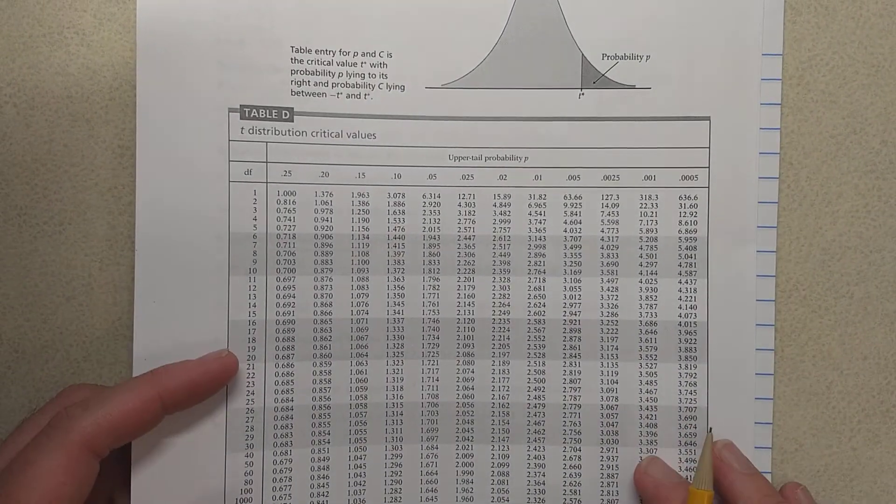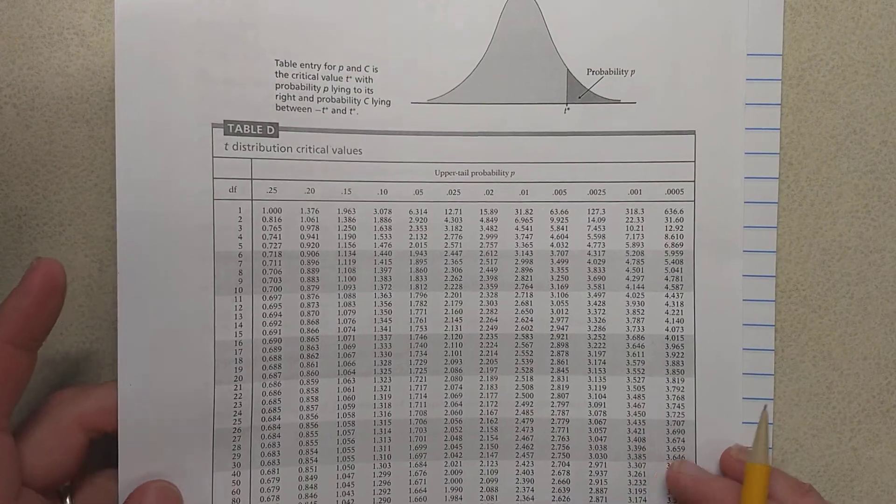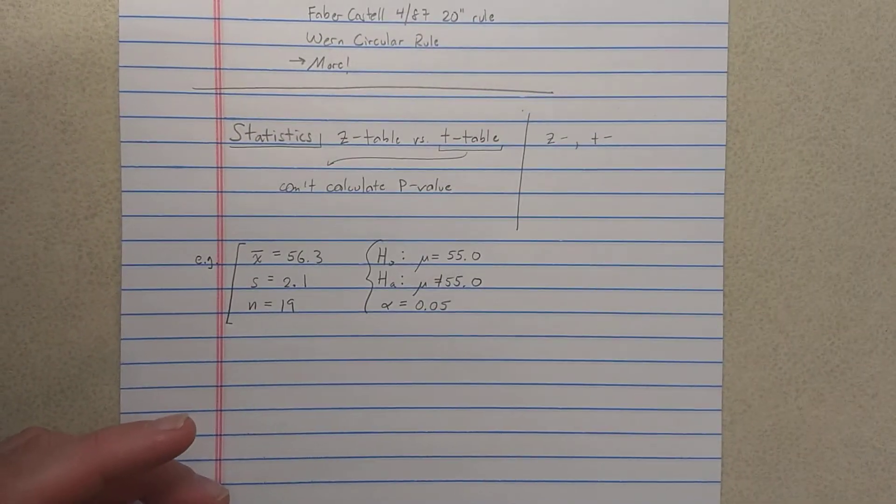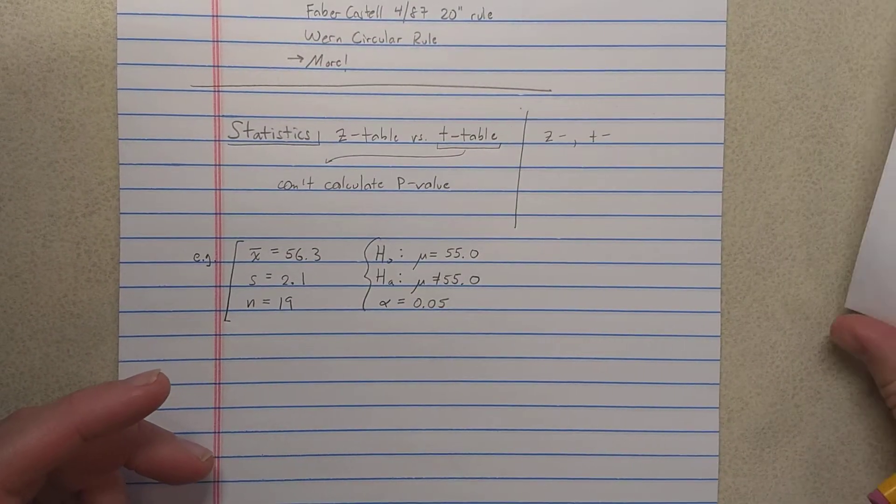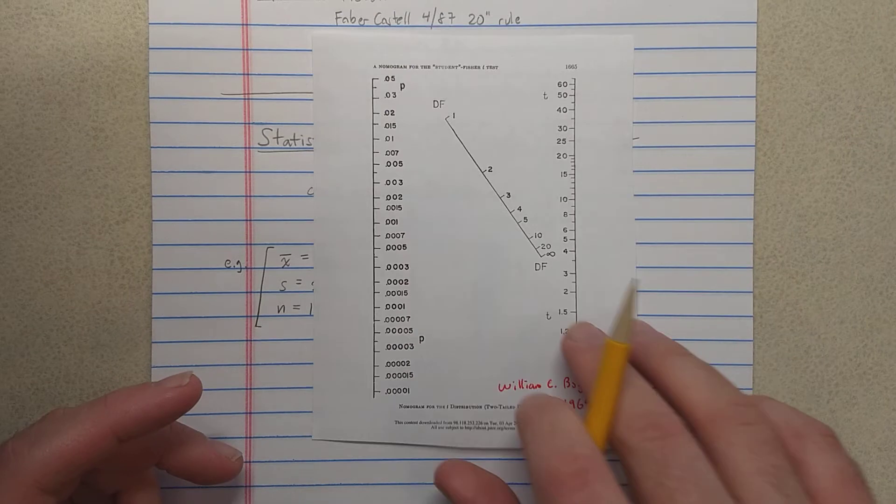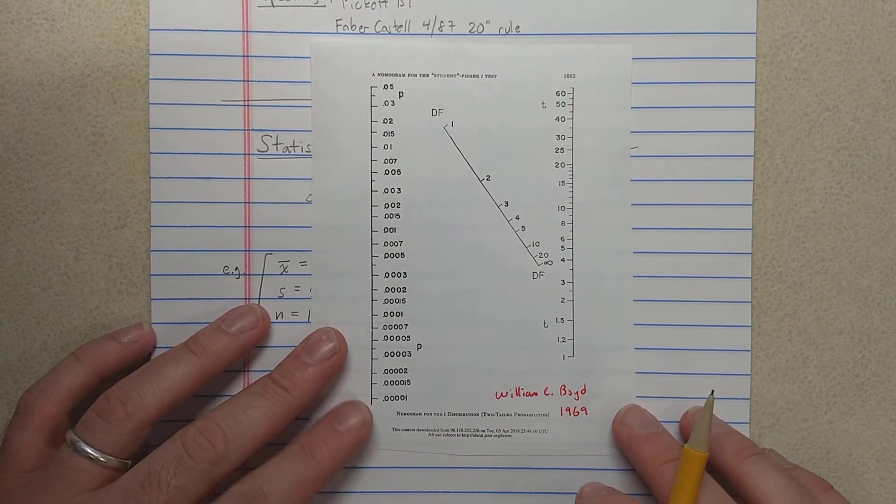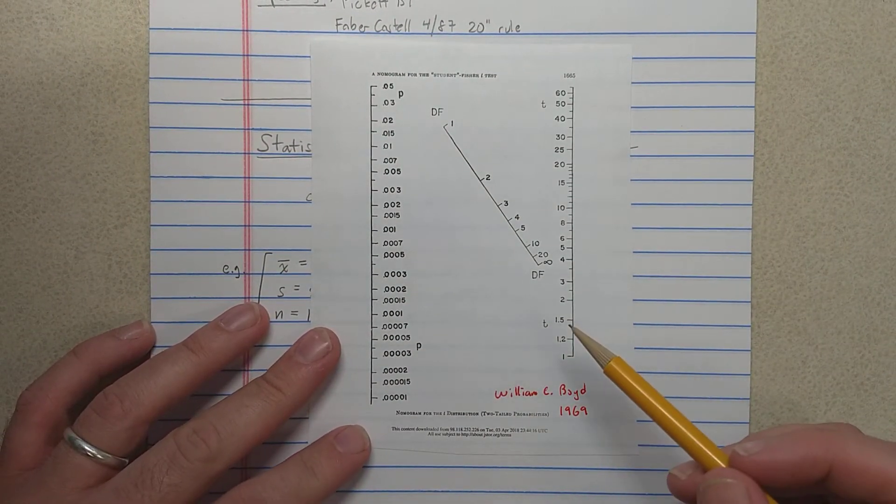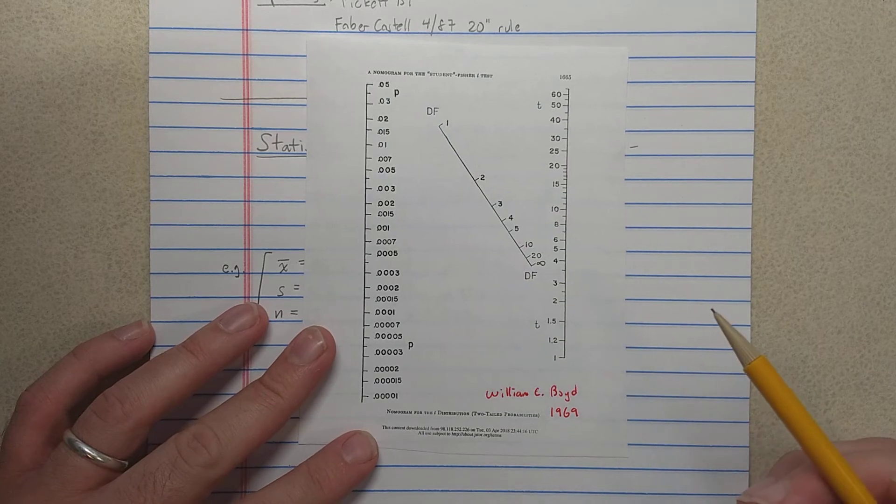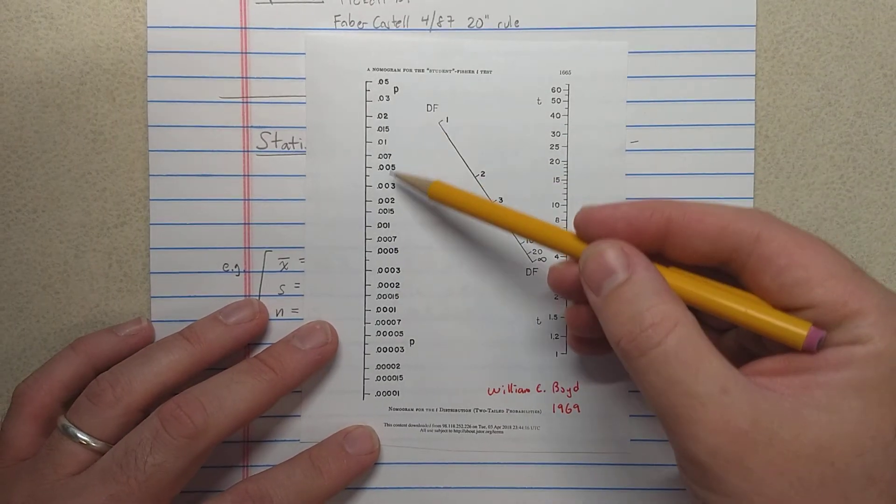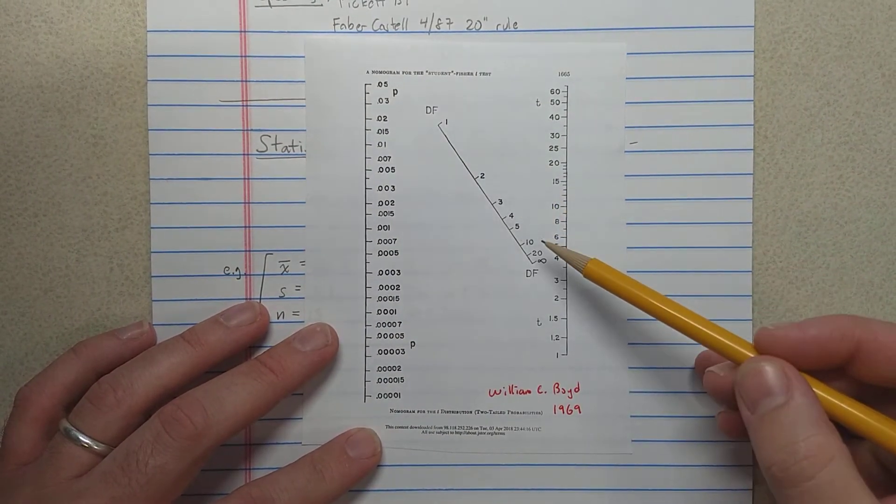And so I got to thinking about this, is there some solution to this problem? So I went online, I was able to find a paper from 1969 where William C. Boyd makes this very interesting t-chart.